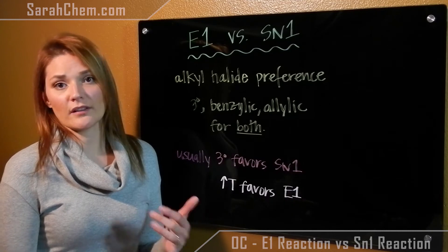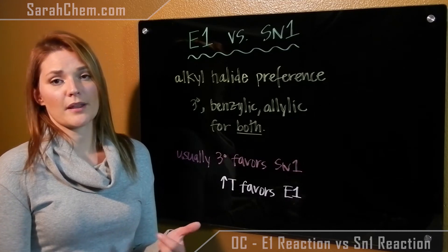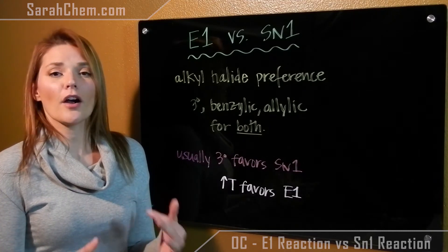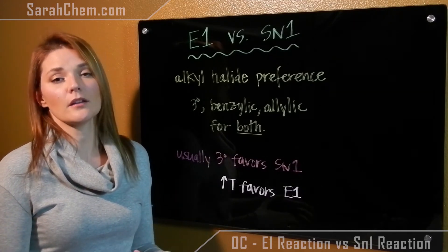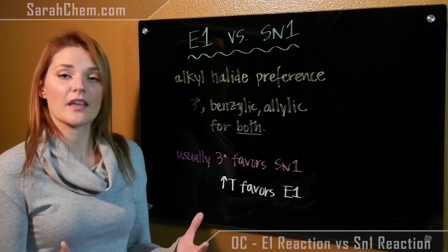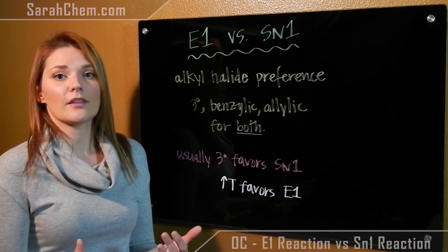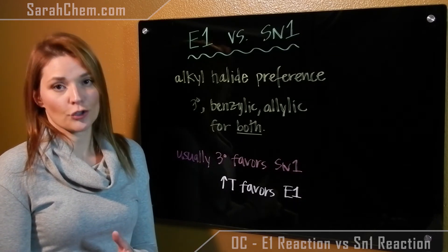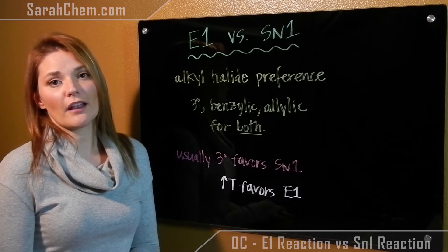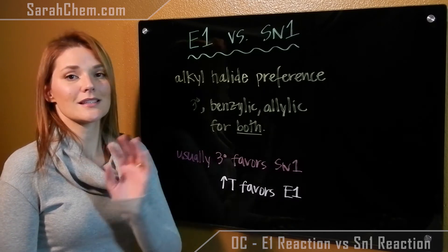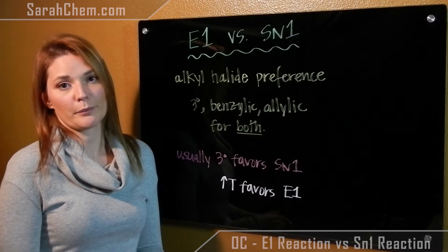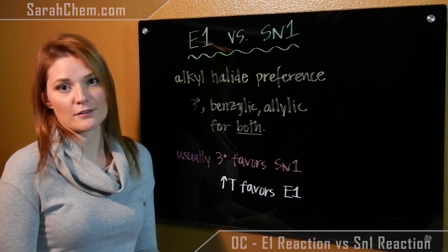They only like tertiary, benzylic, or allylic. There are a couple of cases where you may have one be produced in a greater quantity than the other. In the first case, it's the tertiary case. So for tertiary alkyl halides, typically you'll see that the SN1 product is favored.